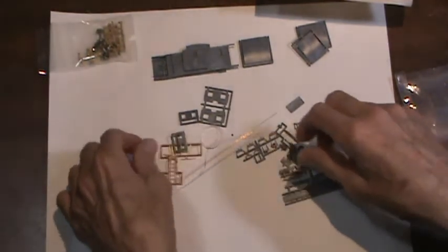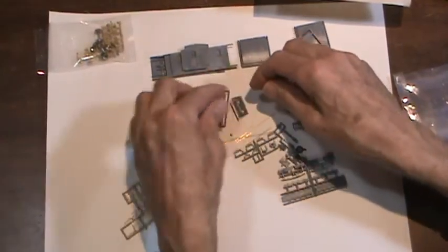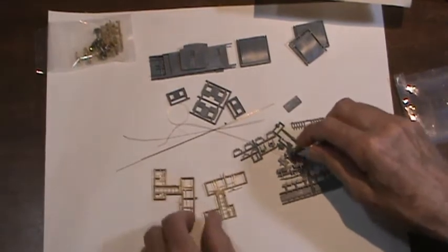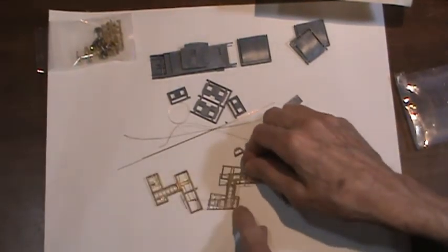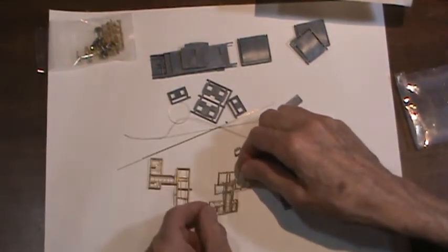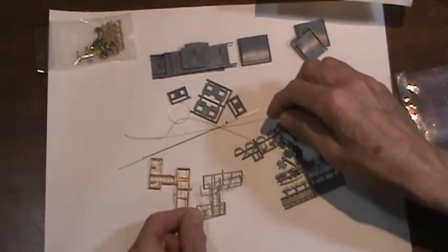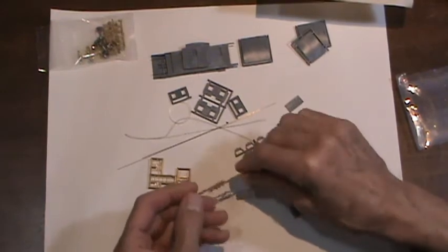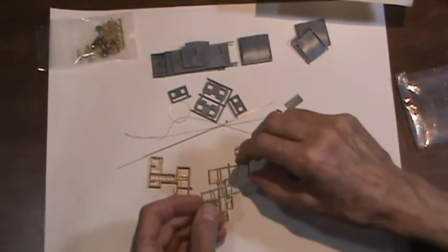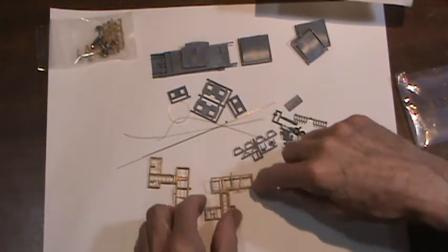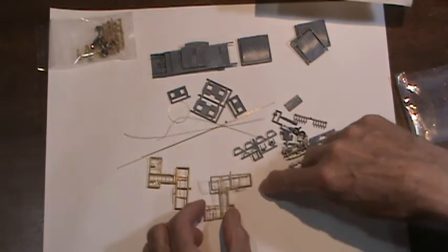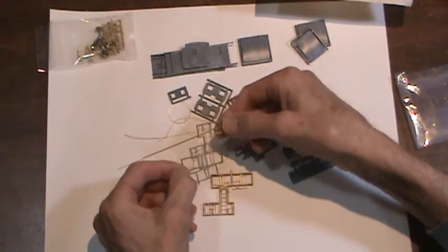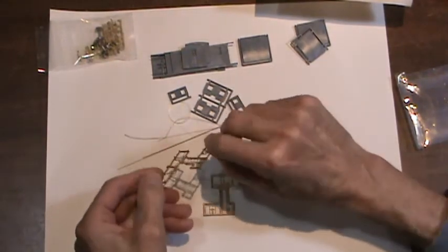And then we have some really interesting stuff here. These are your cast brass end railings and ladders. Getting these off of the brass sprue should prove to be rather interesting. And here's your brake levers and brake gear. This is really quite the thing.